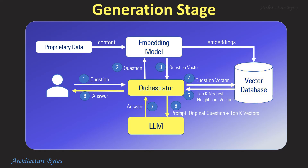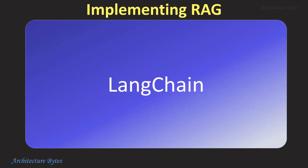The generation stage then takes the original query and the retrieved information and sends it to an LLM to generate a response. To implement RAG, we could use a popular open source framework called LangChain, which has the necessary tools and APIs to simplify the process of building such LLM-driven applications.